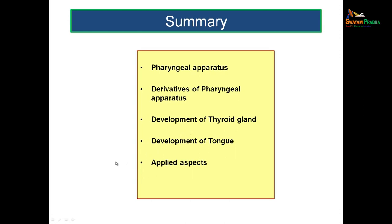To summarize: in this session we have seen the formation of the pharyngeal apparatus — pharyngeal arches along with ectodermal clefts and endodermal pouches, seen on the ventral aspect of the primitive pharynx as U-shaped arches. Out of the six arches, the fifth usually disappears, leaving five arches. We discussed the five arches and their derivatives, the development of the thyroid gland, the development of the tongue, and applied aspects. That is the end of the pharyngeal apparatus. Thank you.